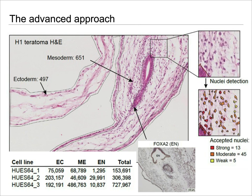For instance, the first teratoma shows almost equal representation of ectoderm and mesoderm but very little endoderm. However, in the second one, there's a lot more ectoderm compared to the others, which are more similar to each other in terms of numbers. The third one is again different, showing more mesoderm than ectoderm and a much smaller number of endoderm cells — suggesting that overall it's very difficult to come to a quantitative conclusion on whether this particular cell line differentiates into any one of these germ layers preferentially.